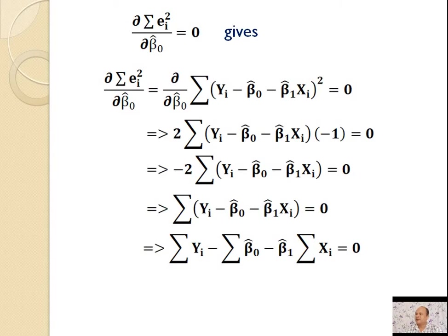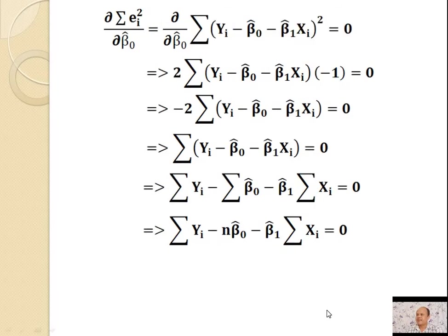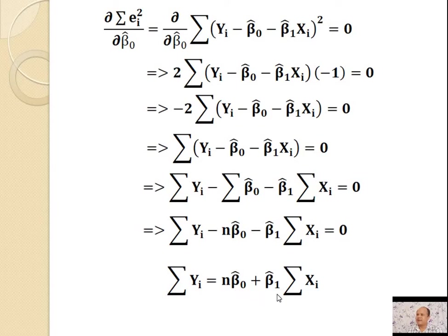Removing the brackets, we get Σyᵢ − Σβ̂₀ − β̂₁Σxᵢ = 0, that is Σyᵢ − nβ̂₀ − β̂₁Σxᵢ = 0, since β̂₀ is a constant. Taking this portion to the right-hand side, we get Σyᵢ = nβ̂₀ + β̂₁Σxᵢ. This is Equation 2.